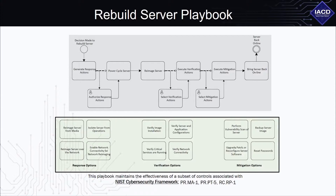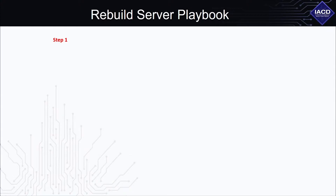You and I are the target audience. Let's step through the process steps involved in building this example playbook that can be applied in creating all IACD playbooks. Step 1: Identify the initiating condition. Ask yourself what event or condition is going to start this playbook. This could be a time-based trigger, the detection of an event, or the decision to act. In this case, the initiating condition is that the decision has been made to rebuild the server.